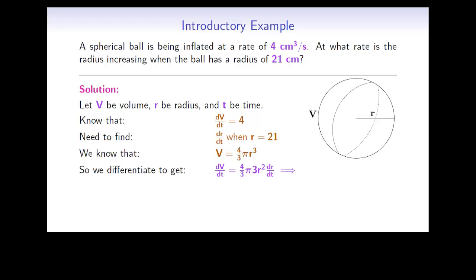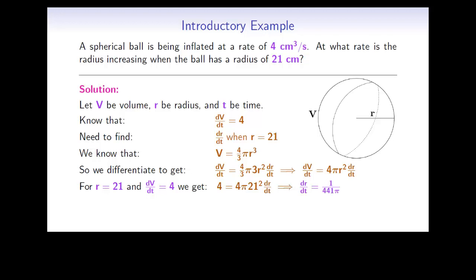In order to find dr/dt, we need to differentiate both sides with respect to T. Using chain rule, and recalling that both volume and radius are changing with time, we get dV/dt is equal to 4/3 pi times 3 R squared dr/dt. Simplifying, this gives dV/dt is equal to 4 pi R squared dr/dt. We now substitute the things we know: dV/dt is equal to 4, and we're interested in what is happening when R is 21. This gives 4 is equal to 4 pi times 21 squared dr/dt. Solving for dr/dt gives dr/dt is 1 over 441 pi. We conclude that the radius is increasing at a rate of 1 over 441 pi centimeters per second.